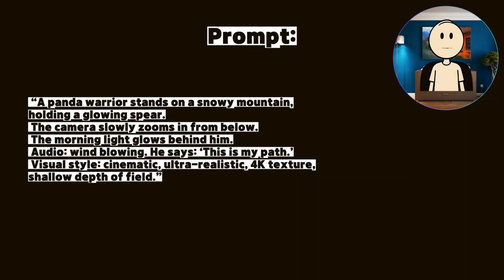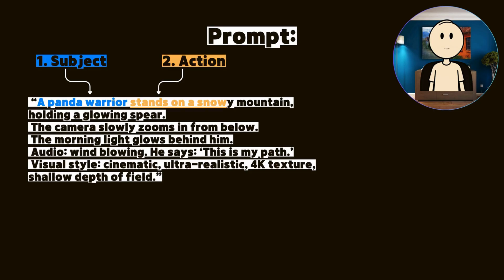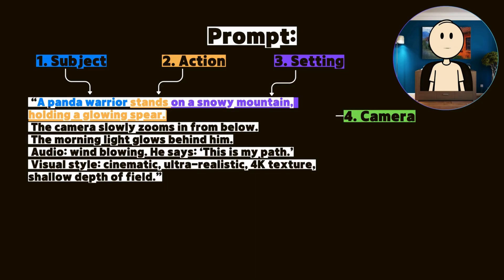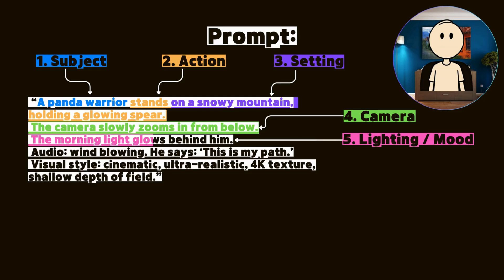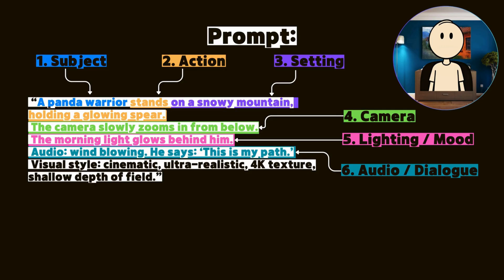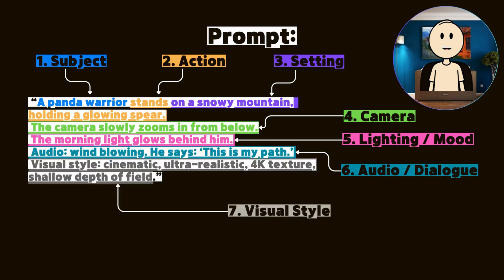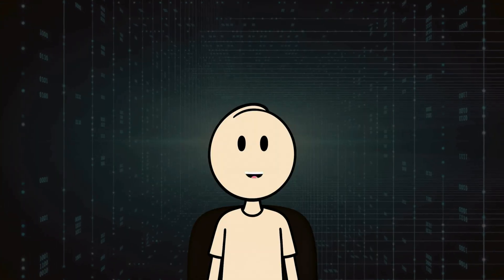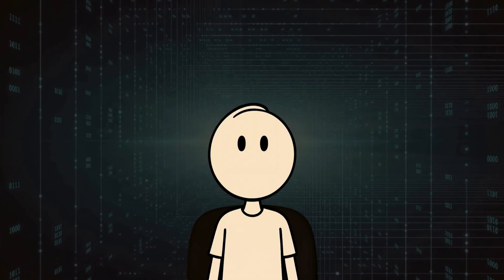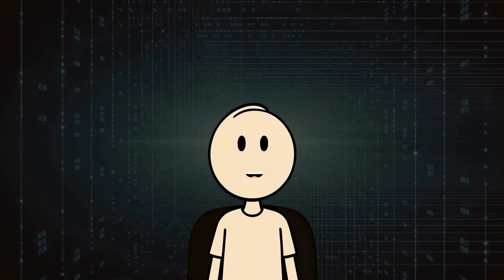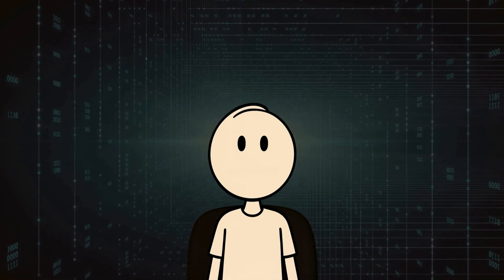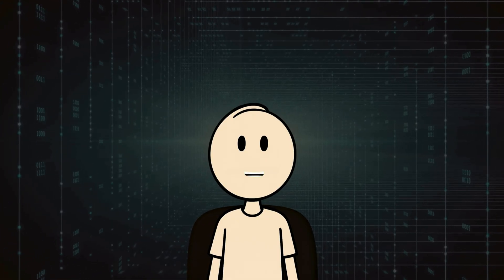Here's the seven-point prompt formula I use every time. Subject — who's in the scene? Action — what are they doing? Setting — where is this happening? Camera — how should it be filmed? Lighting and mood — what's the atmosphere like? Audio and dialogue — what do we hear or what's being said? Visual style — what should it feel like visually? The more clearly you describe what you want, the more control you have over the result. That's not just a tip — it's the entire game.